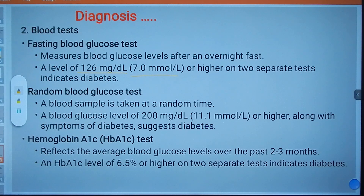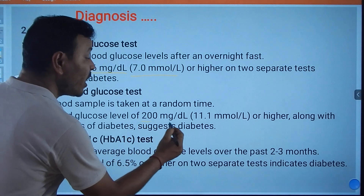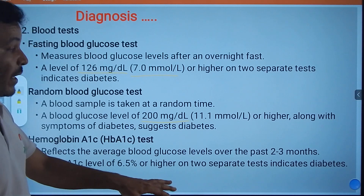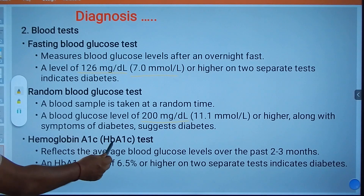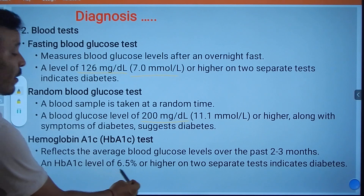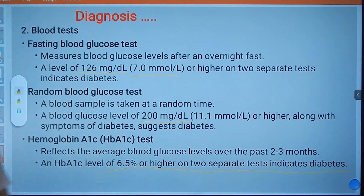A level of 126 mg/dL (7 mmol/L) or higher on two separate tests indicates diabetes. A random blood glucose test can also be done — a blood sample taken at any time. A level of 200 mg/dL (11.1 mmol/L) or higher along with symptoms indicates diabetes. There is also the HbA1c test, which reflects average blood glucose levels over the past two to three months; an HbA1c level of 6.5% or higher on two separate tests indicates diabetes.